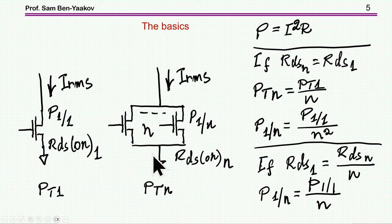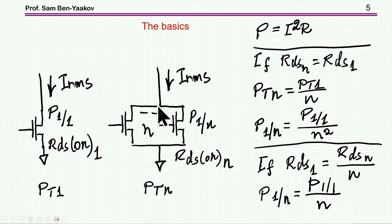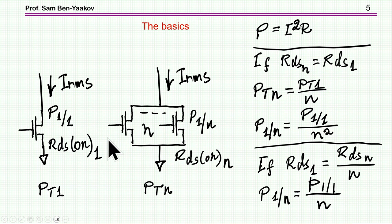But to compare apples to apples, I need to compare cases where the total resistance of the single transistor equals the total resistance of the N-transistor combination. In that case, the total power dissipated is the same, but the power dissipated by each individual transistor is divided by N.